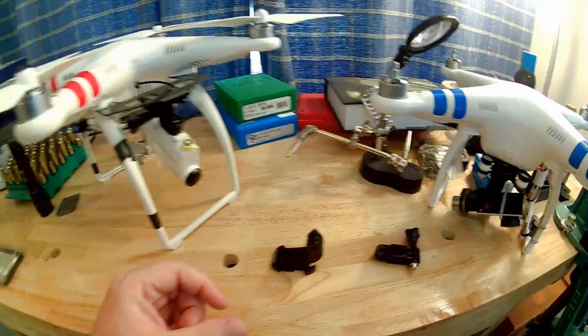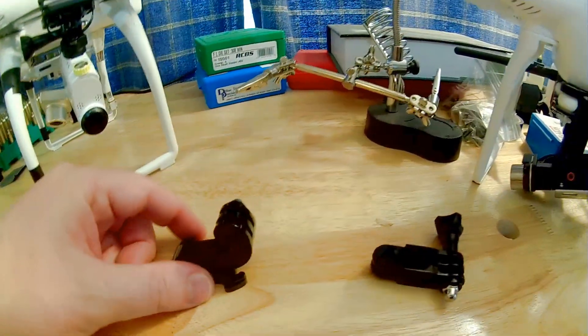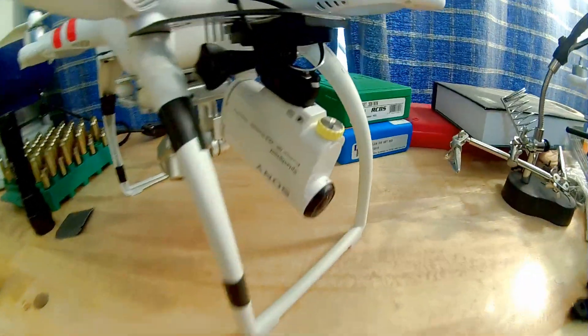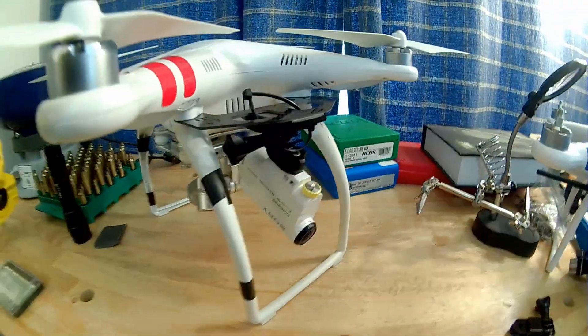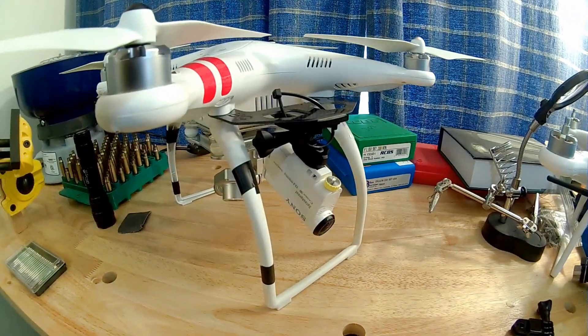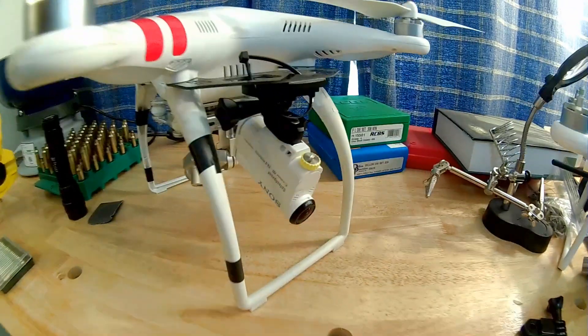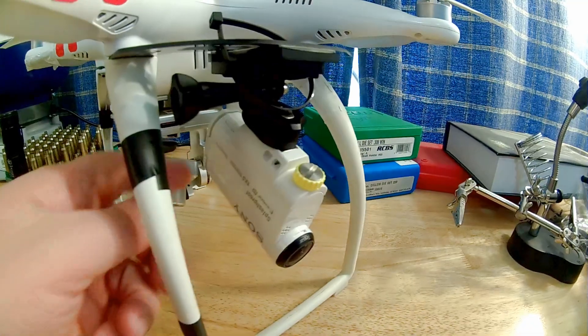Okay guys, this is the update to the video that I posted earlier where I mounted a Sony action camera to a DJI Phantom 2 Vision Plus. Now the problem that I had before was the camera would start vibrating and shaking violently, and I fixed that issue.